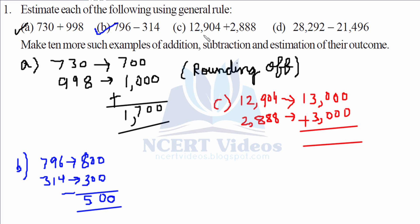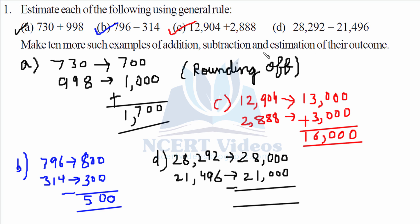For part C, one number is closer to 13,000 and the other is closer to 3,000. Adding: 13,000 plus 3,000 gives 16,000. For part D, 28,000 minus 21,000 is 7,000. That completes question one.